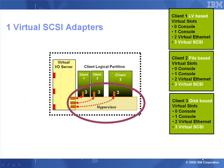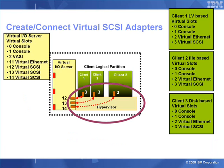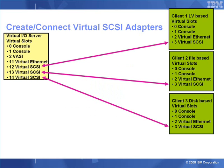We're going to demonstrate three different clients to demonstrate the three different sorts of virtual disks we can connect up. In all cases, it's virtual slot 3 that we're going to use for the SCSI adapter on the client side. For the Virtual I/O server, its virtual slots start at 11 — that will be used for Ethernet — and we'll need one virtual SCSI adapter for each of the clients, so they'll be numbered 12, 13, and 14.